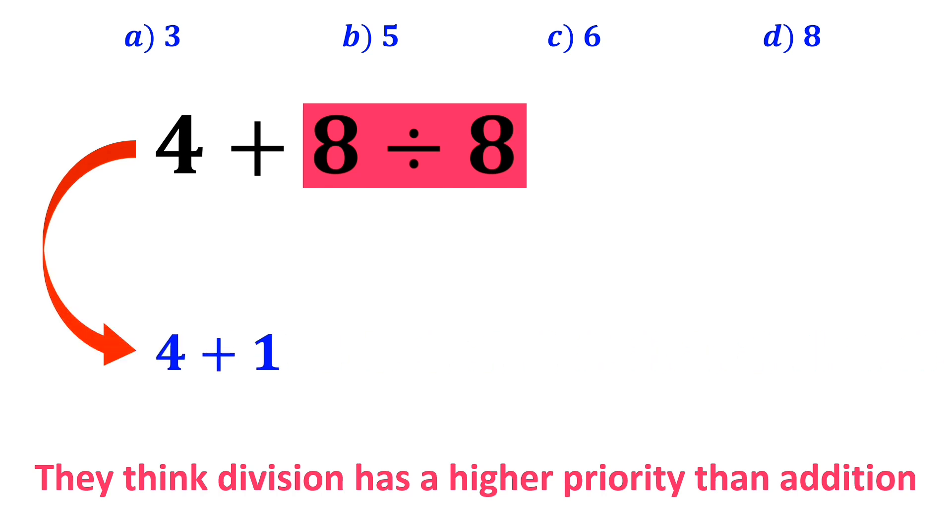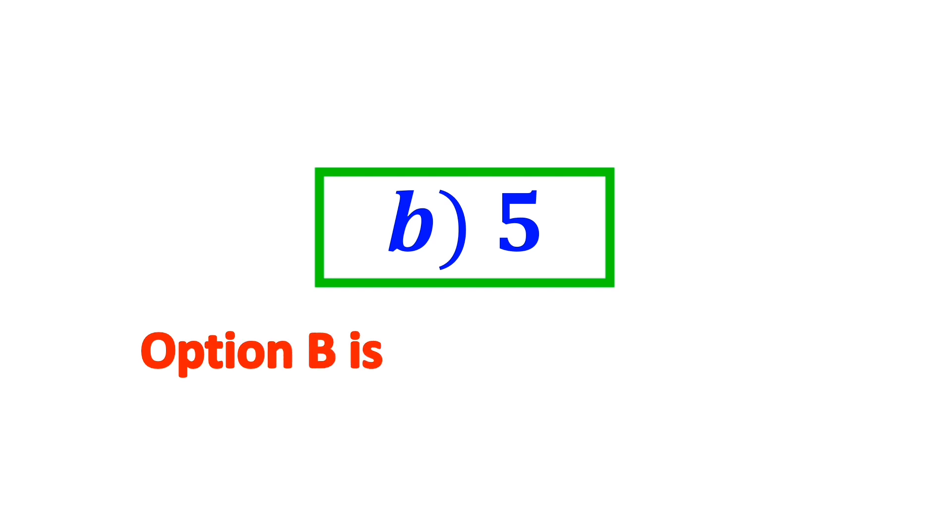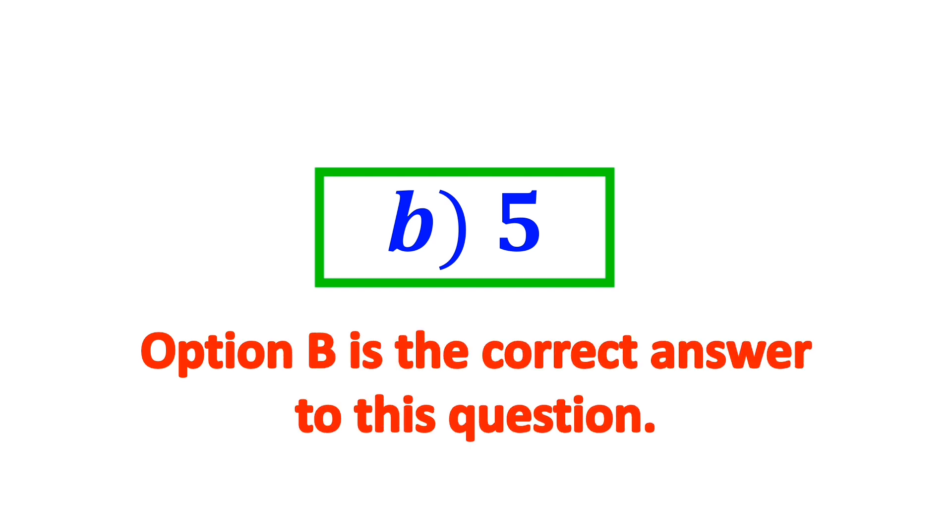And rewrite this expression as 4 plus 1, which ultimately gives them the answer 5. And immediately, they conclude that option B is the correct answer to this question. However, it's not the correct answer.